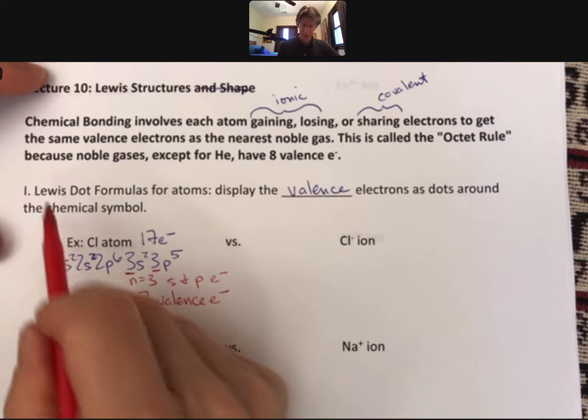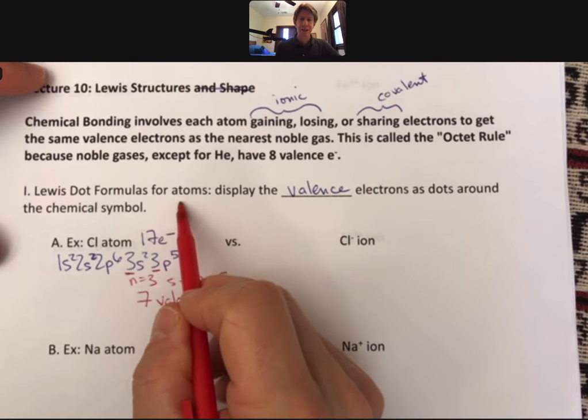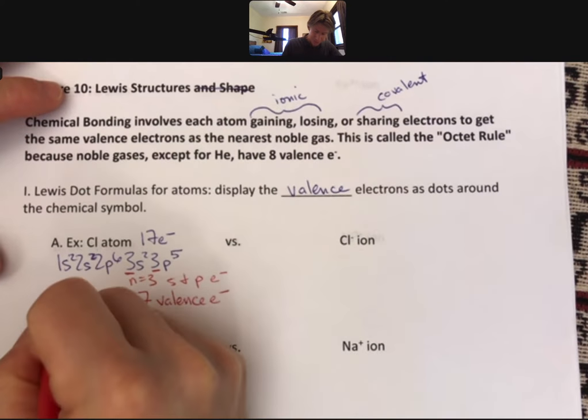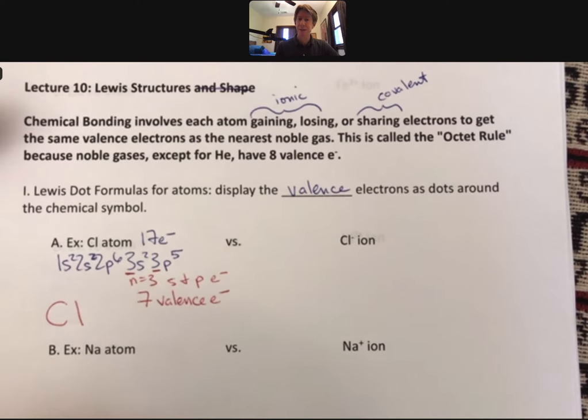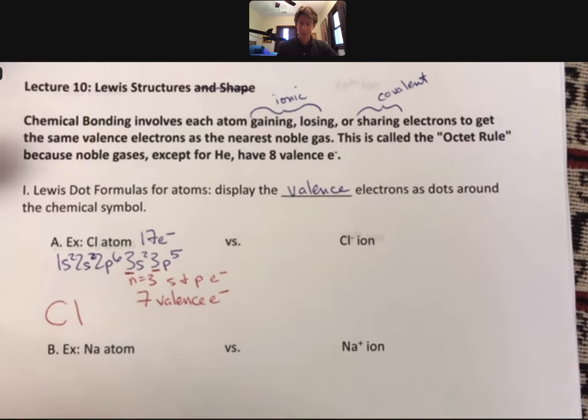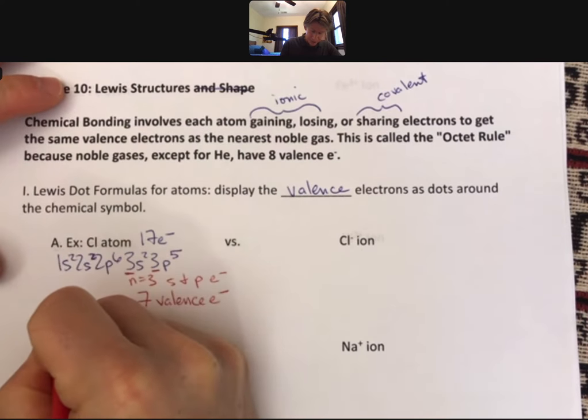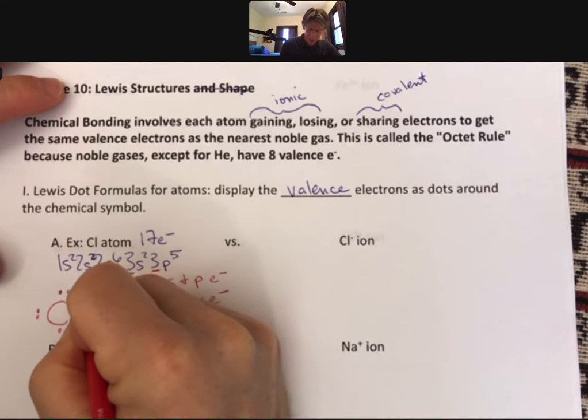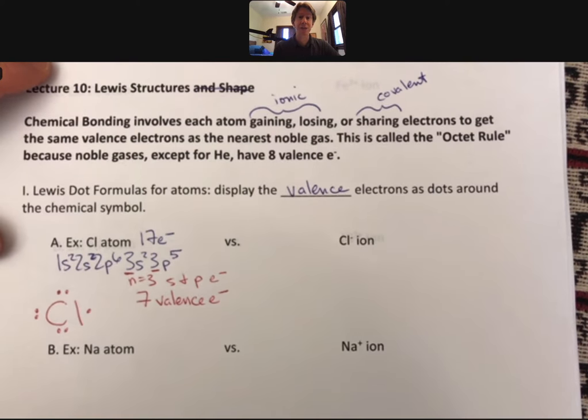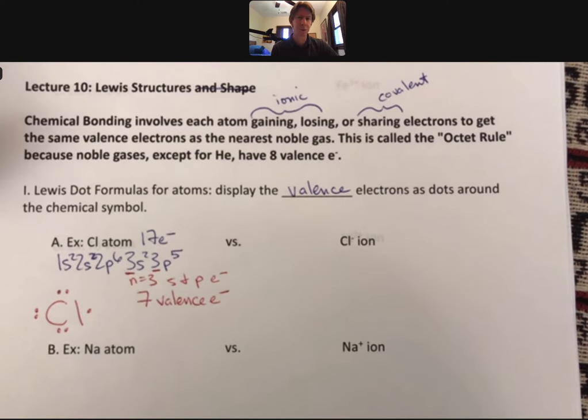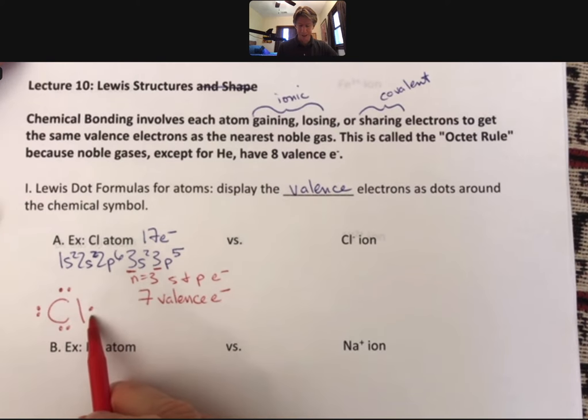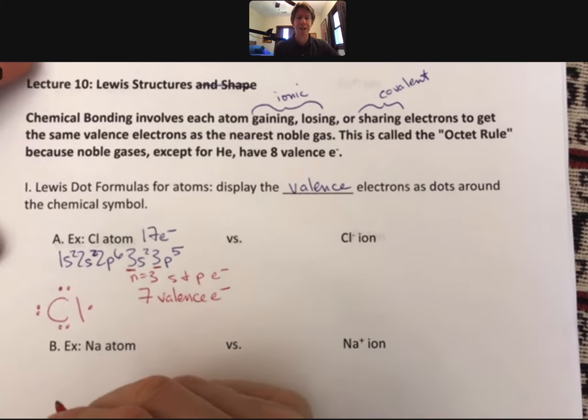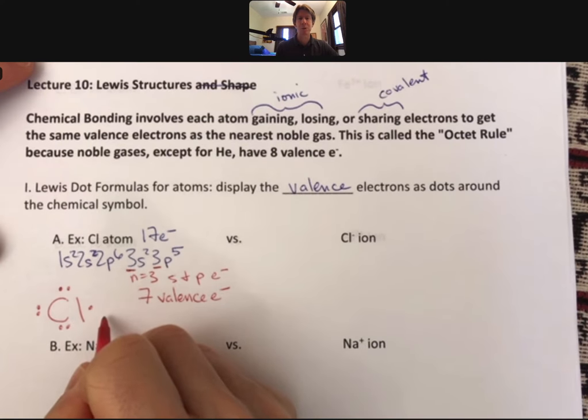If we have 7 valence electrons, the Lewis dot formula has the electrons as dots around the chemical symbol. Cl is the chemical symbol for chlorine. I'm going to put 7 dots around it, and I'm going to do them in pairs on the north, south, east, and west portion. This will help us later. This single dot could be on any of the sides.